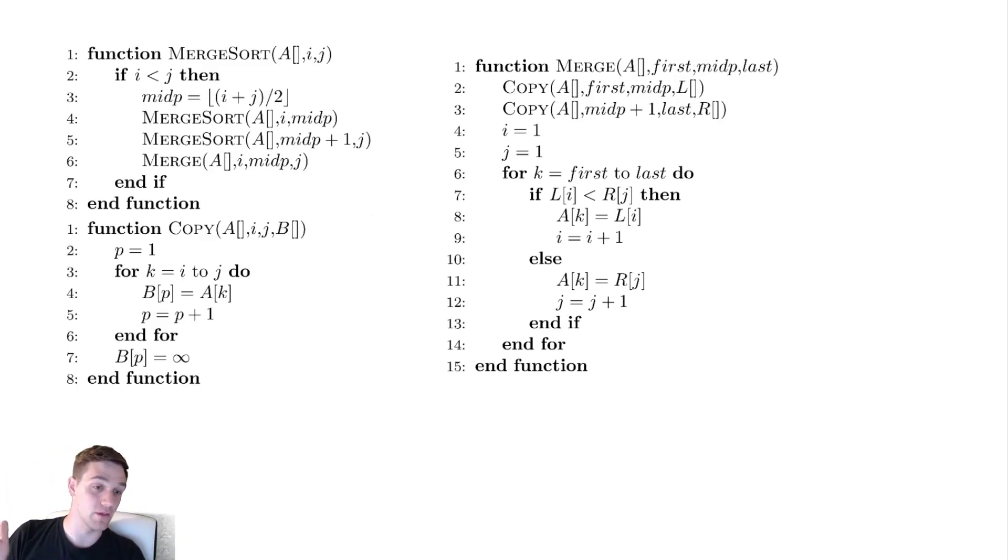and be inserting into our original array the smallest values from the left and right halves. So how does that actually work? Well we're going to iterate over an entire range of values in the original array, and we're checking is the left value or the right value the smaller of the two. Whichever one is smaller, we throw it back into the original array into the correct position and then move further along in that array.